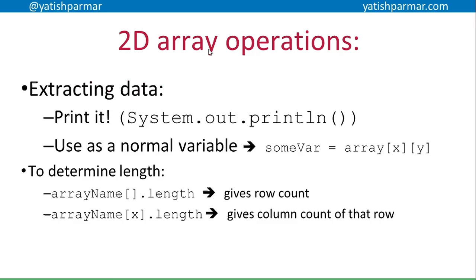If you want to extract data you can just print it out — in Java use `System.out.println`. You can use it as a normal variable: `someVariable = array[x][y]` to extract data, or the other way around, `array[x][y] = value` to assign a value into that element.